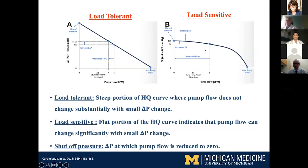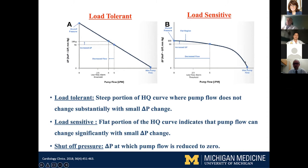At the lower ranges of flow, the HeartMate 3 is low-sensitive, so a small change in the difference between aortic and LV pressure — the afterload versus preload — can cause a bigger drop in flow. Whereas out at higher flow ranges, it's more resilient. We really want to keep the flow in that outer working range.